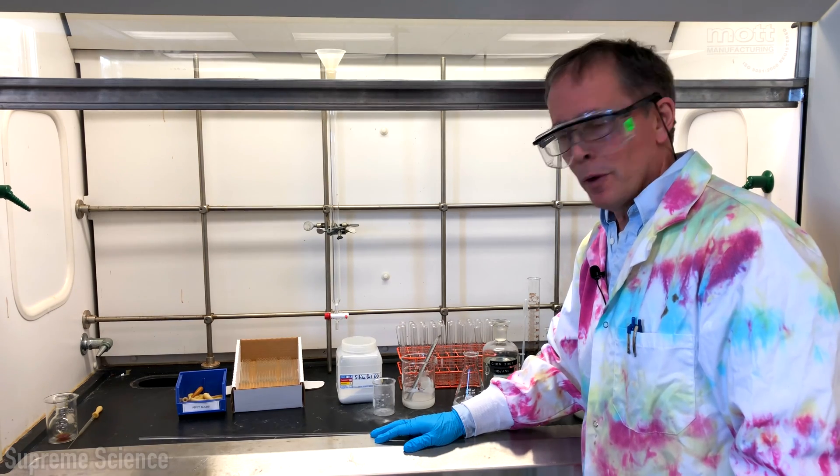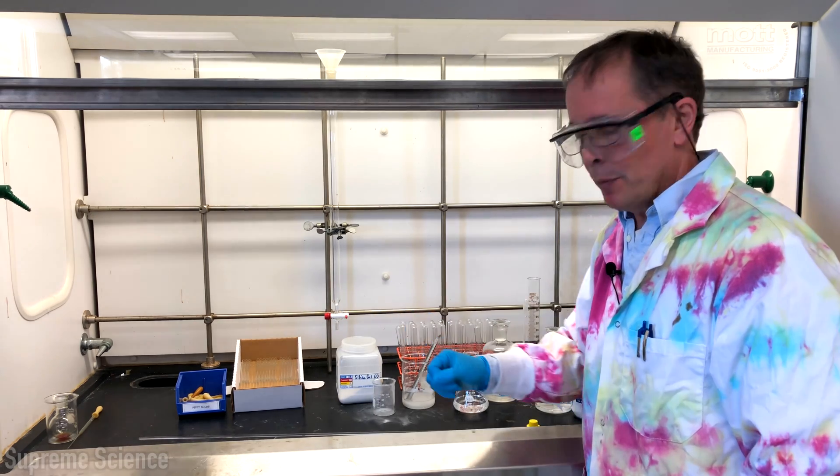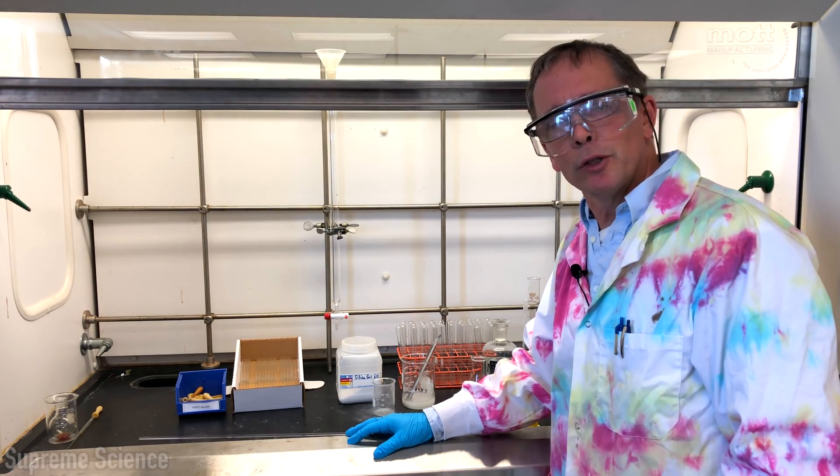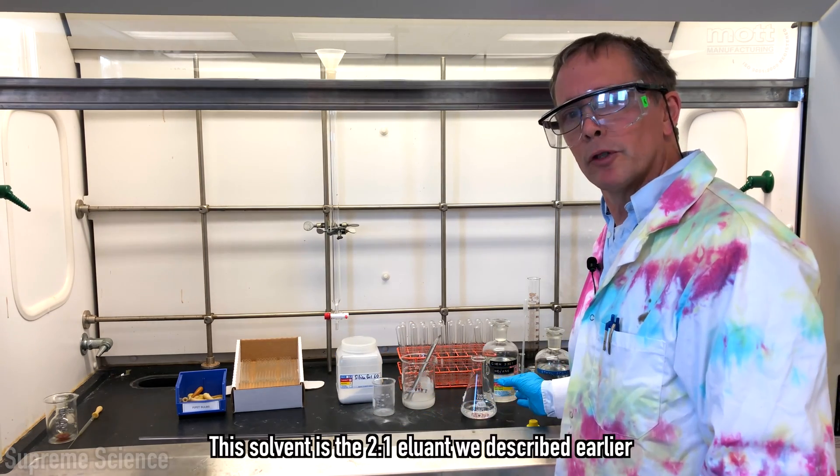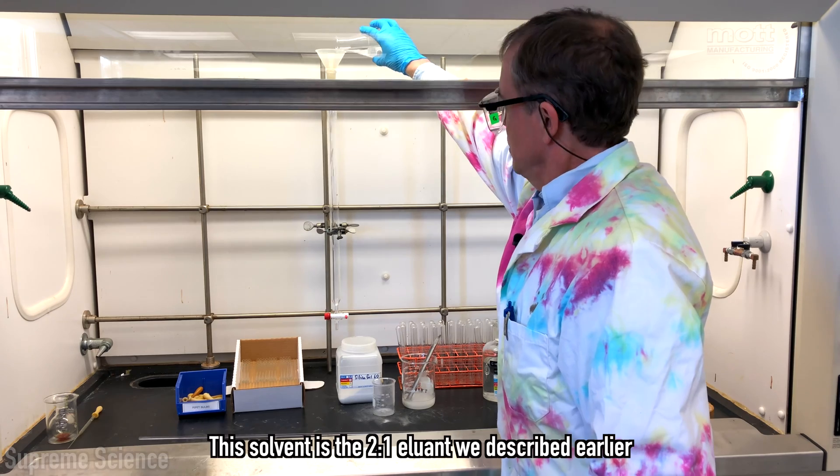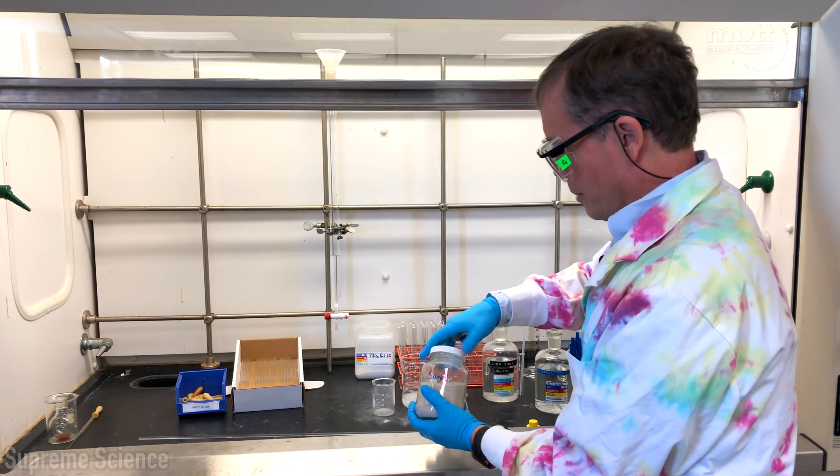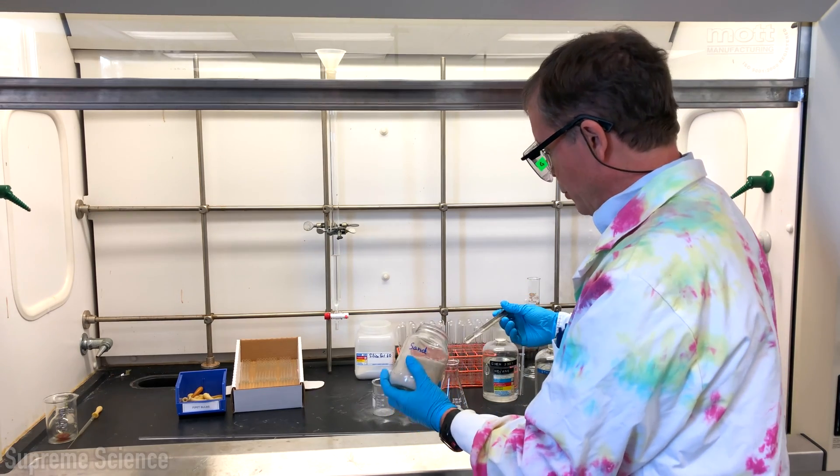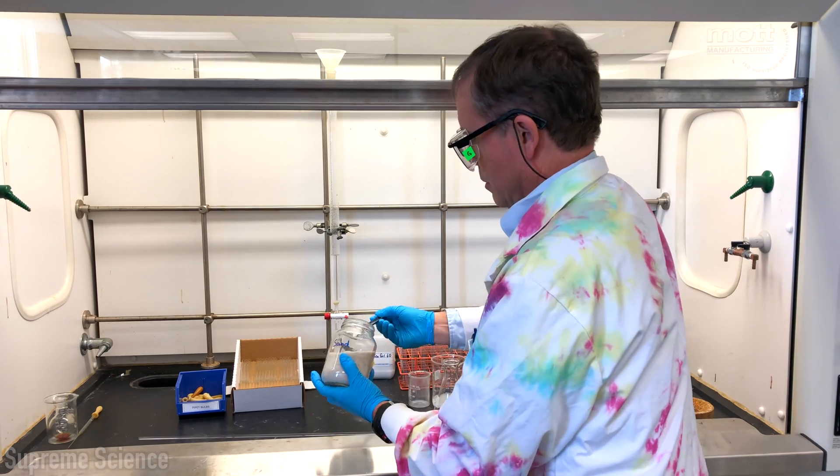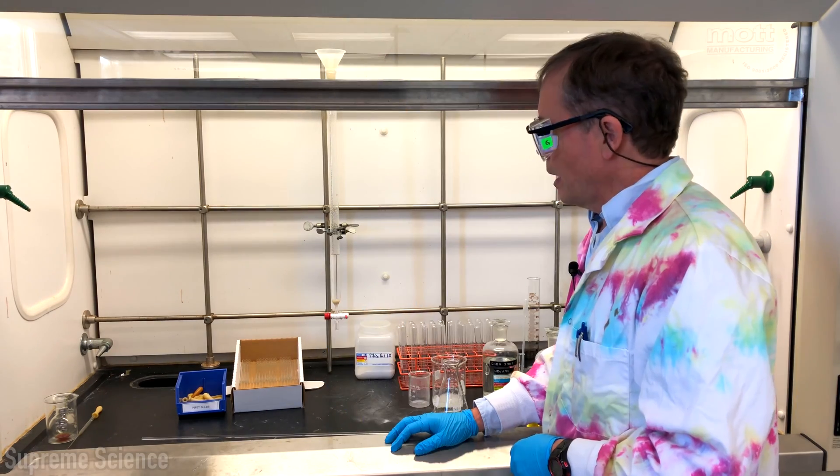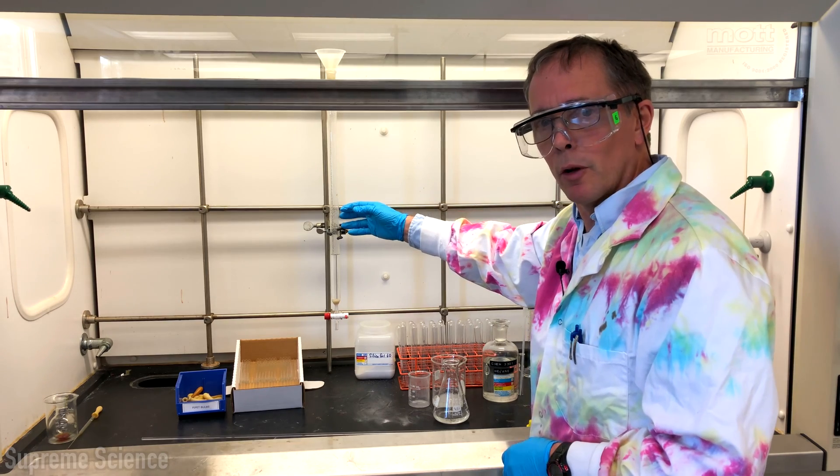Before we add the slurry to the column we have to ensure that we have a glass plug at the bottom which we've already done and add a level sand bed on top of the glass wool which we'll do with the help of solvent. We've used about 15 or 20 mils of solvent. I'm now going to put the sand in through the top. I'm now going to rinse off the sand that's stuck to the side of the column using our solvent mixture.